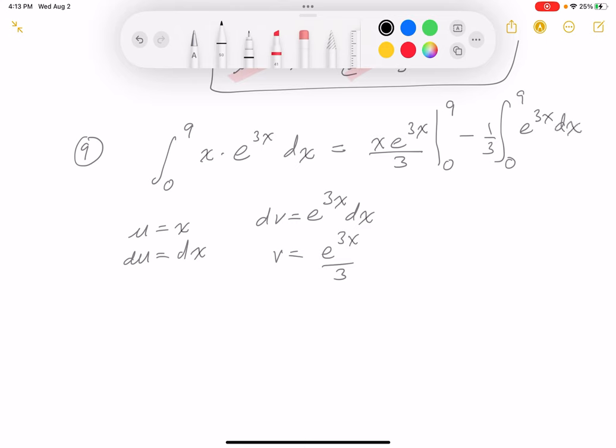So I'm ready to write down the next step, which is an evaluation. Let's write this down. It's going to be 9 e to the 27 over 3 minus 0. What did I just do? I just did this over here. We'll simplify it later, by the way. It does simplify.